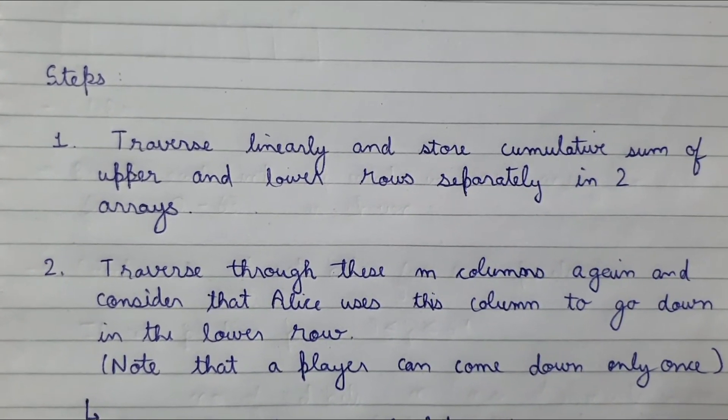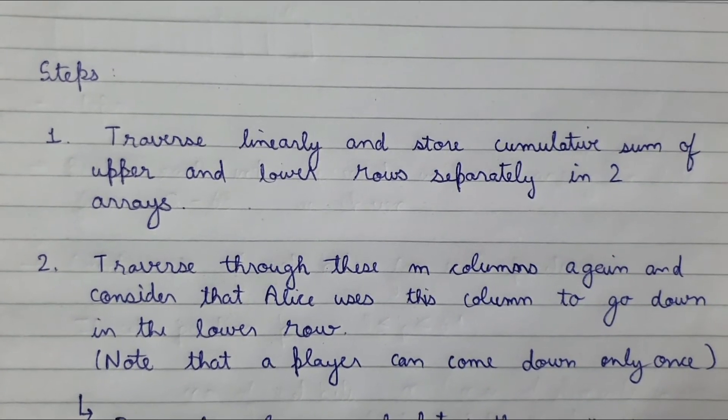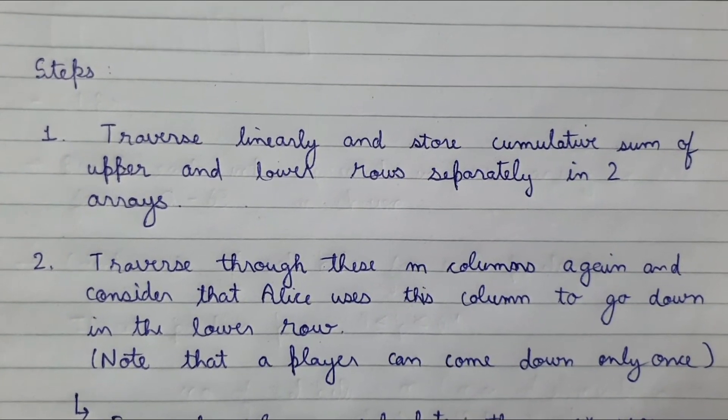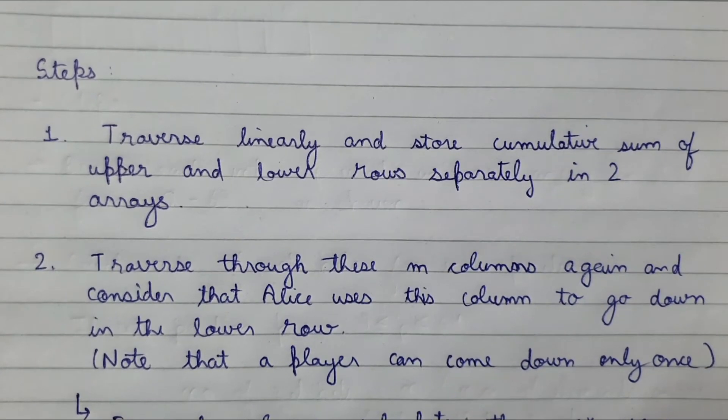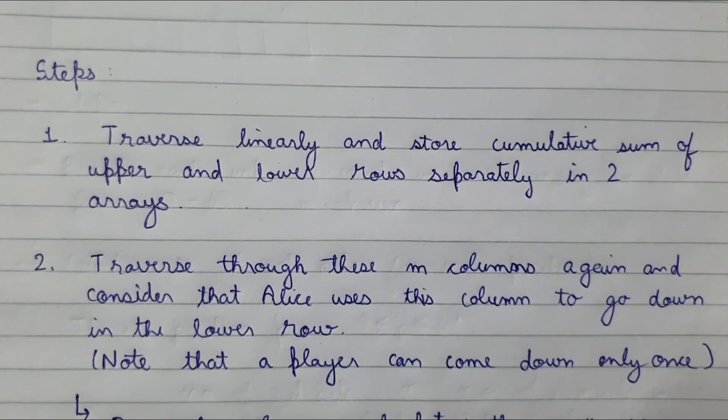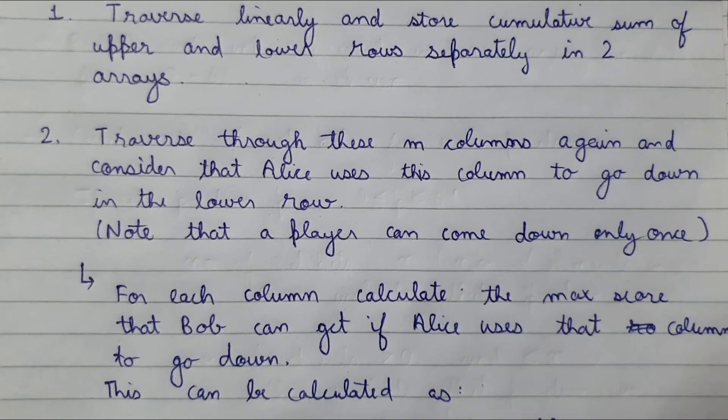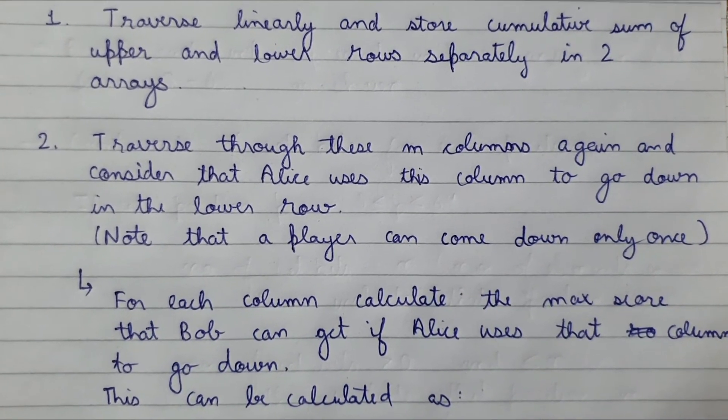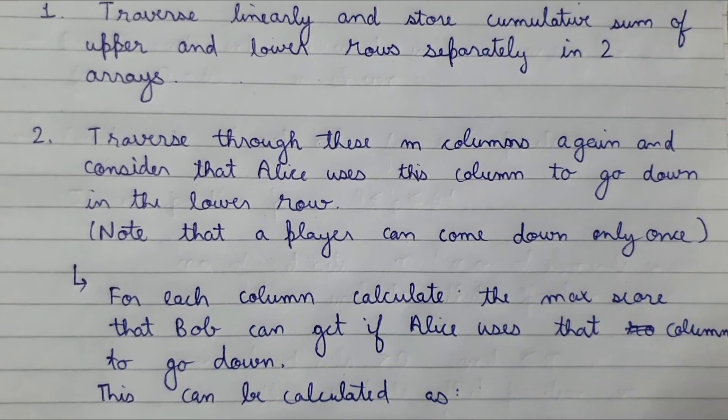Now the second step is that we traverse through the columns again and consider the column Alice uses to go down. We should note that a player can come down only once. Now for each column we calculate the maximum score that Bob can get if Alice uses that column to go down.